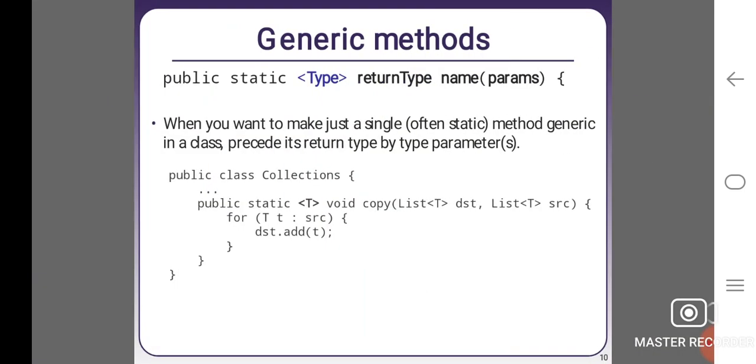Generic methods. public static <Type> returnType name(params). When you want to make just a single static method generic in your class, it precedes its return type by type parameters. public class Collections { public static <T> void copy(List<T> dst, List<T> src) { for (T t : src) { dst.add(t); } } }